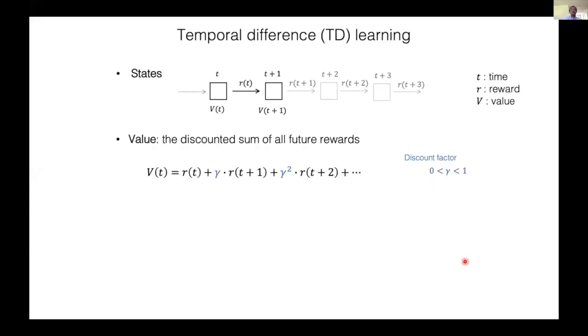There were some jargon in the previous slide and let me first clarify some basic concepts. In reinforcement learning, the value of the state or state values is defined as the discounted sum of all future rewards starting from that state.